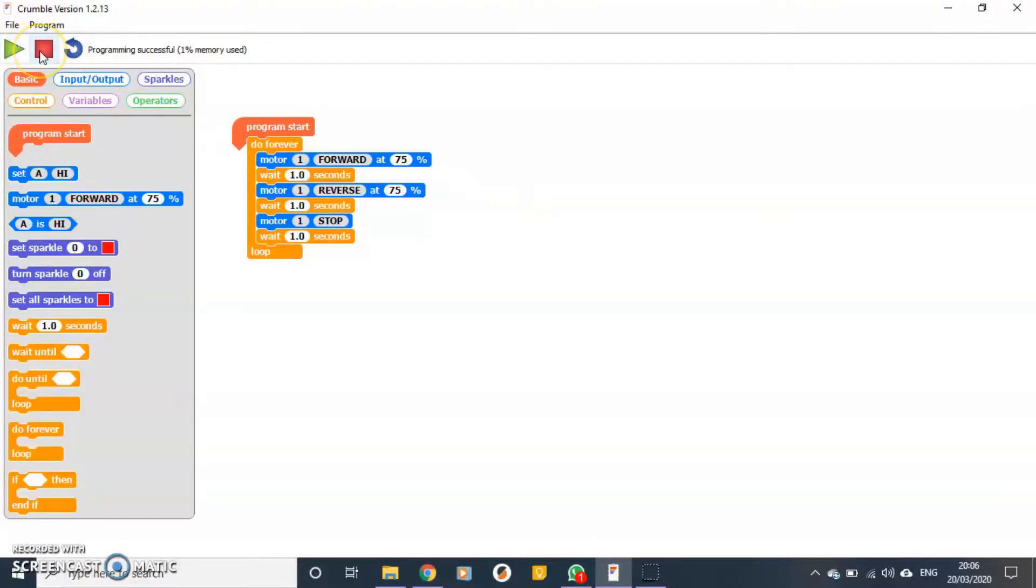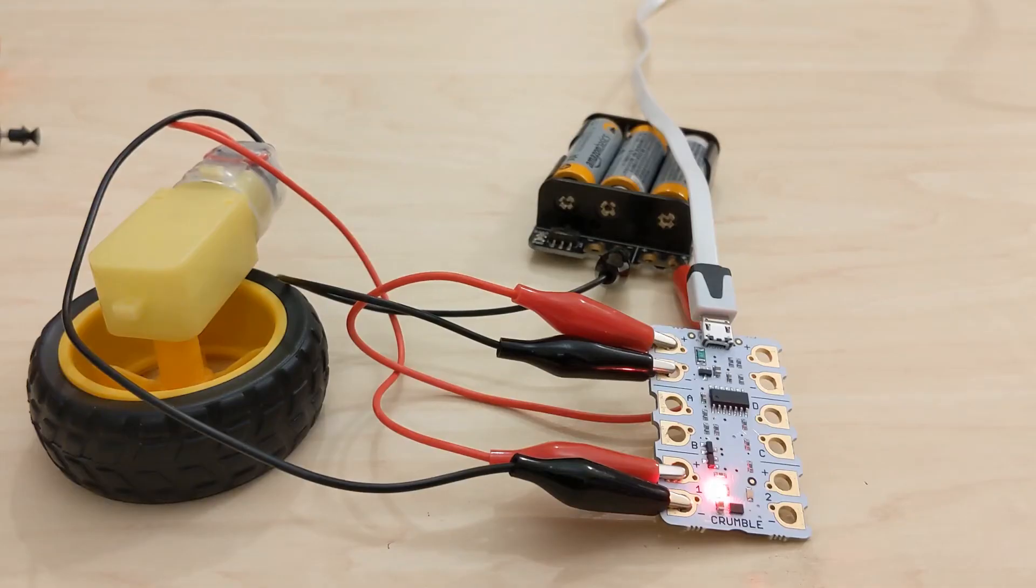Now to make it so we can see this, we can always put this in a do forever loop. So we'll put that in there, drag our code in, and then when we press play it will go forwards, reverse, stop. Although we will need to add an extra delay in there because it's a loop. Forwards, reverse, stop, and it will keep on doing that forever.